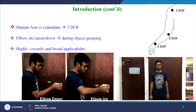Now coming to the realization of redundancy by the human arm: the human arm is redundant because it has seven degrees of freedom mapping to the six degrees of freedom Cartesian space. The six degrees of freedom in Cartesian space are x, y, z positioning and orientation around the x, y, z axes — that is alpha, beta, gamma — which is roll, pitch, yaw angle. The seven degrees of freedom in the human arm are three in the shoulder joint, two in the elbow joint, and two in the wrist joint.